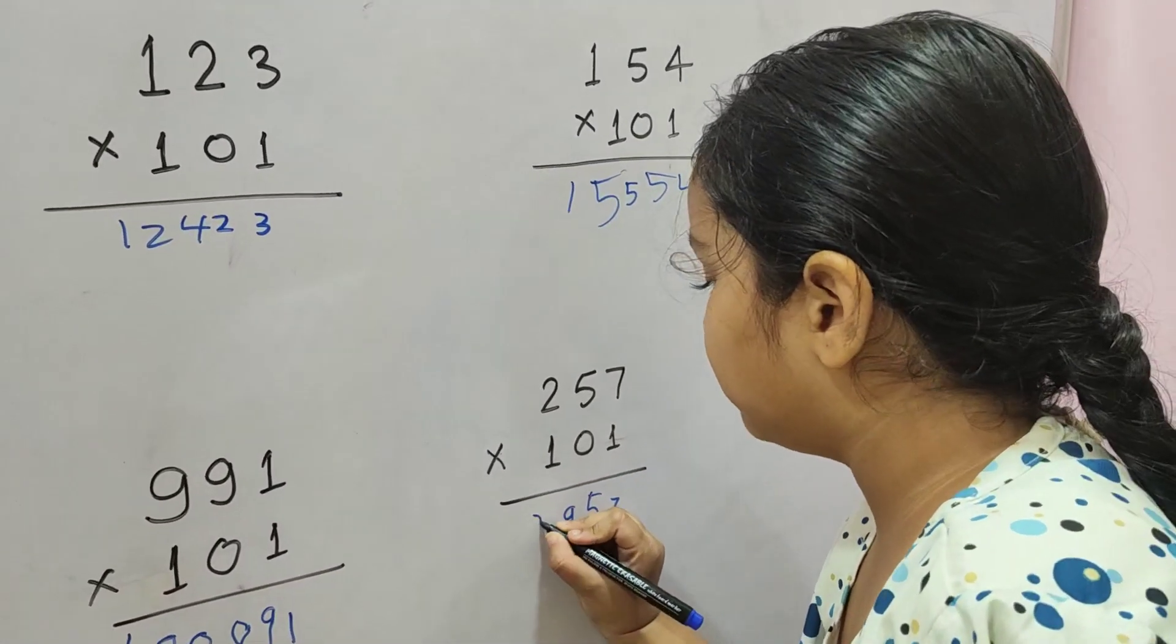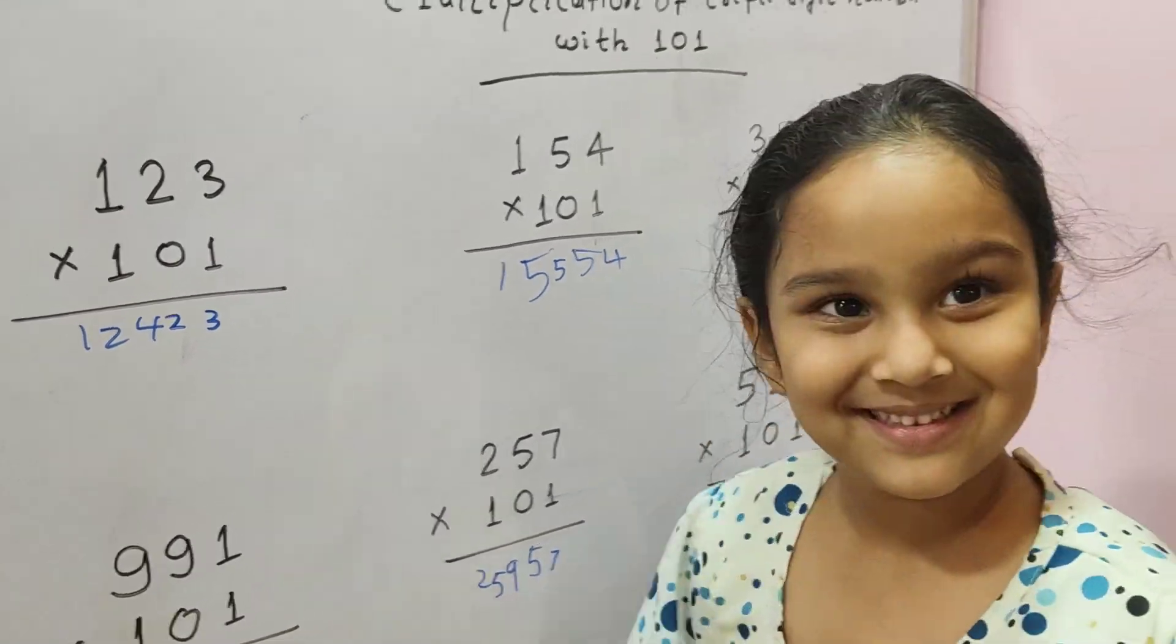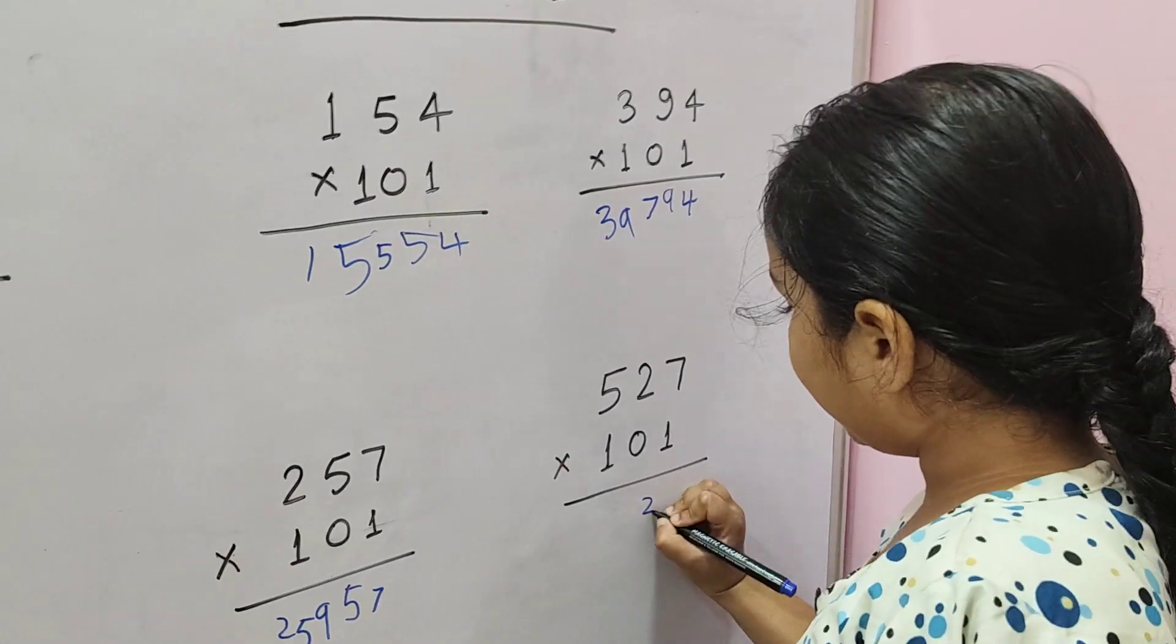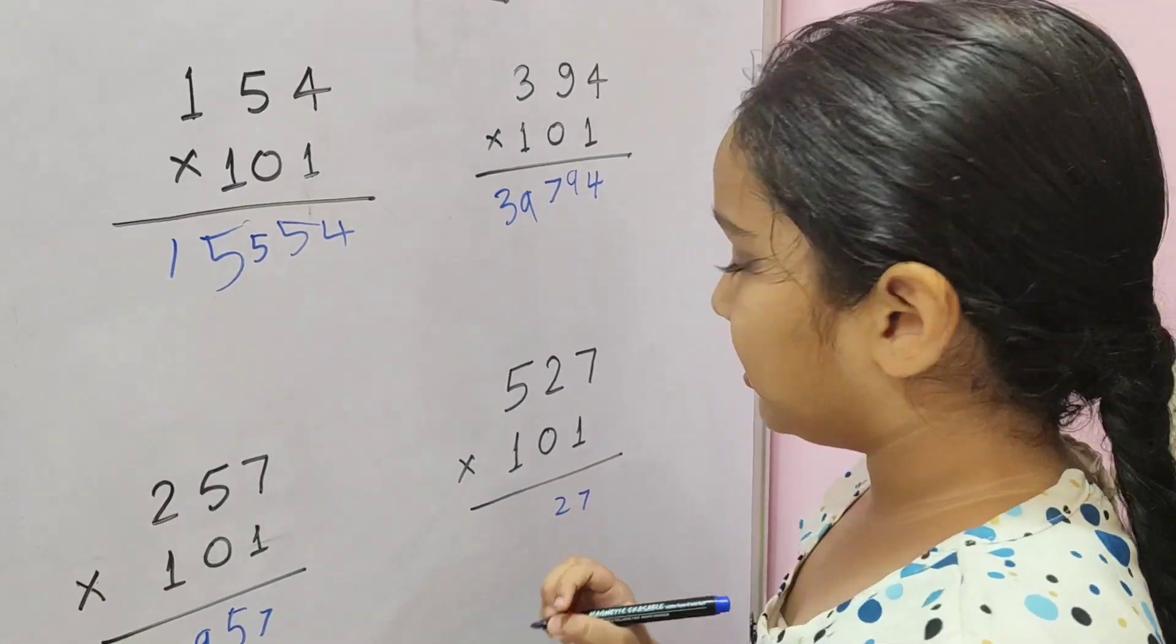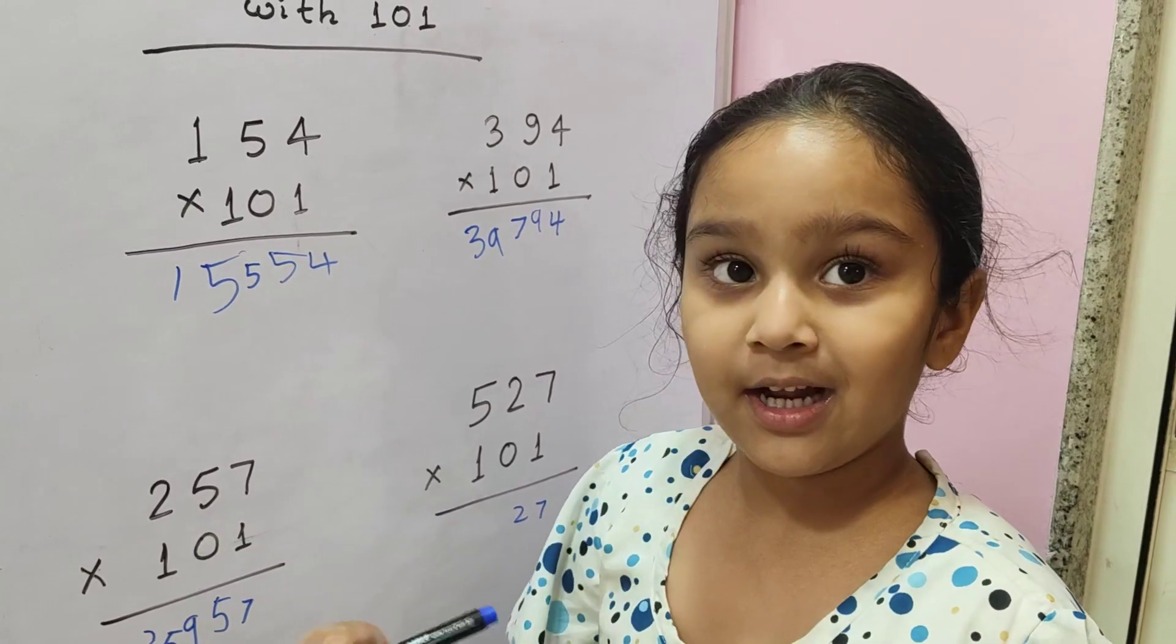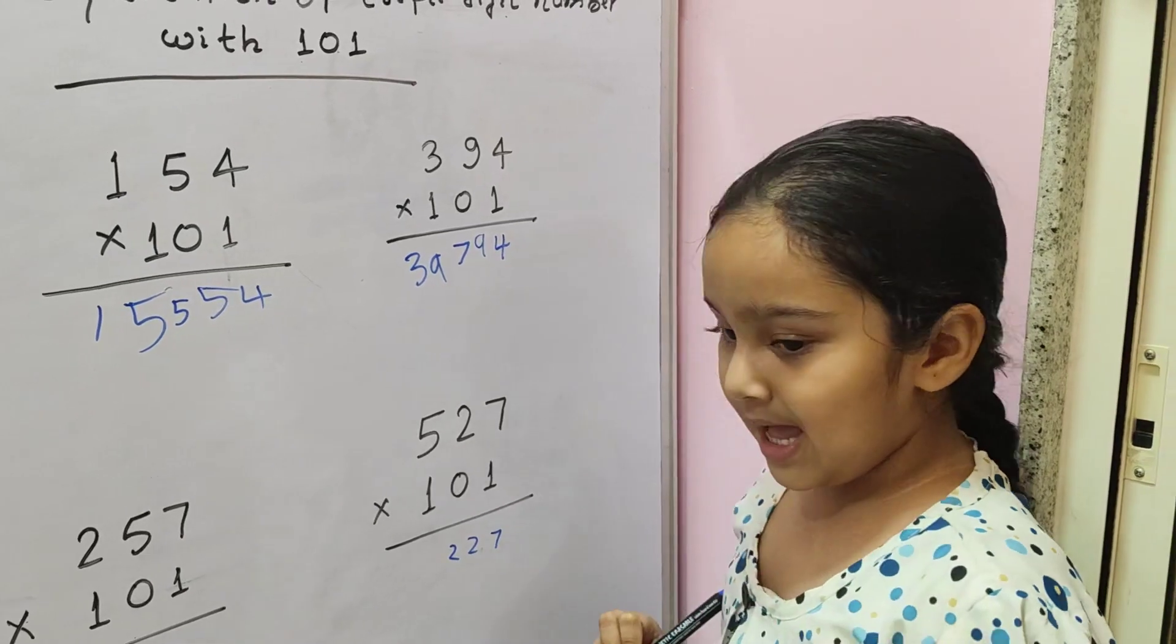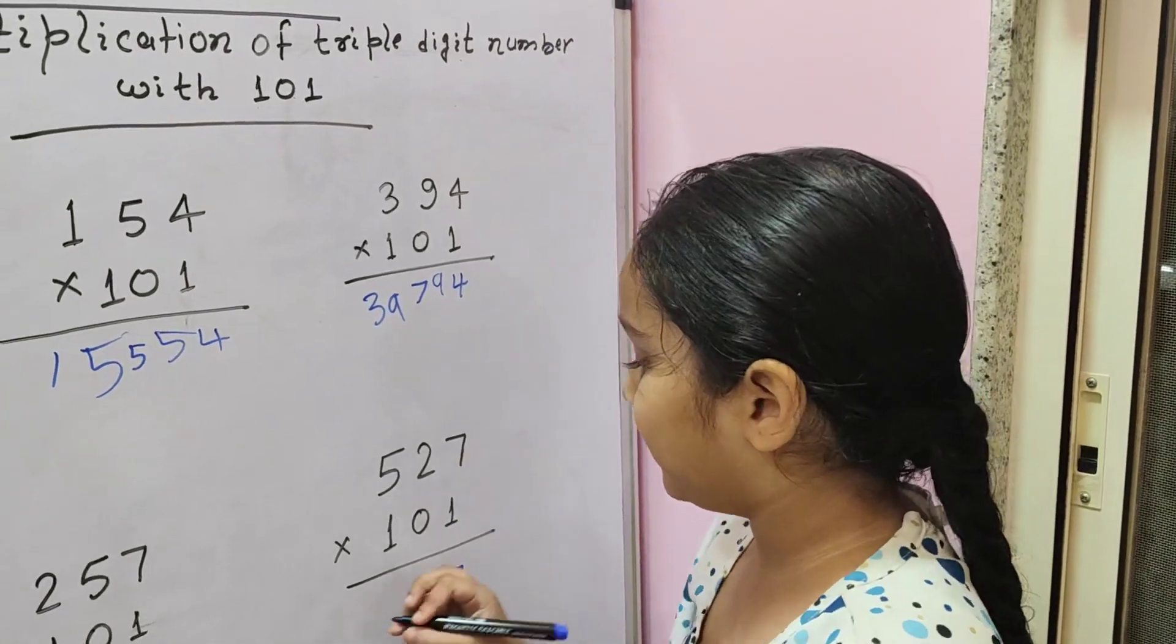And we'll add 27 here. 5 plus 7 is 8, 9, 10, 11, 12. So we'll add 2 here from the 12, and then 1 is in hand. 52 plus 1 is 53.